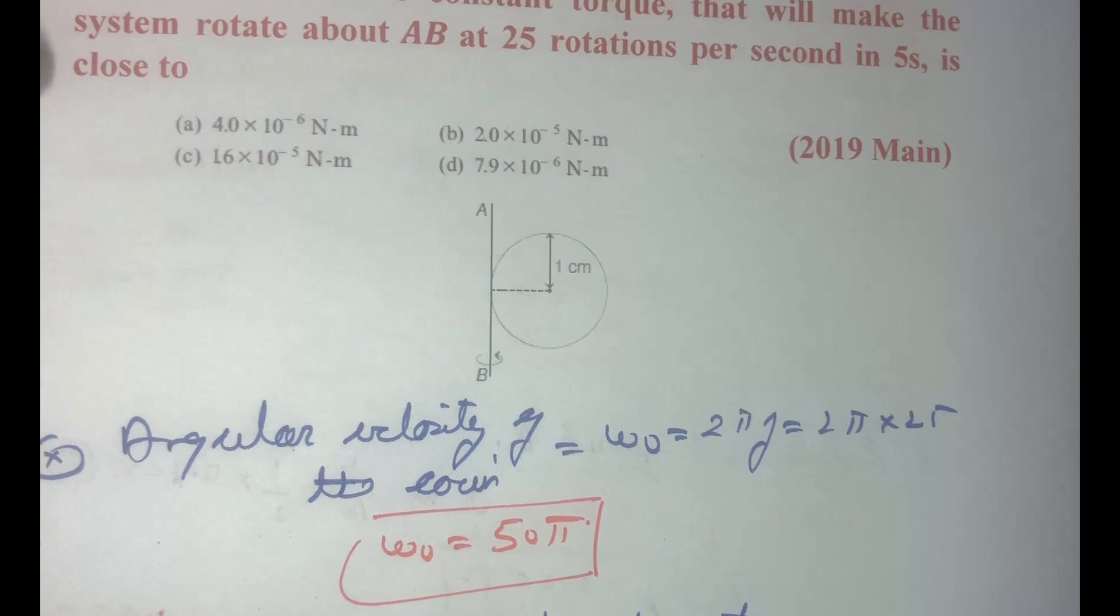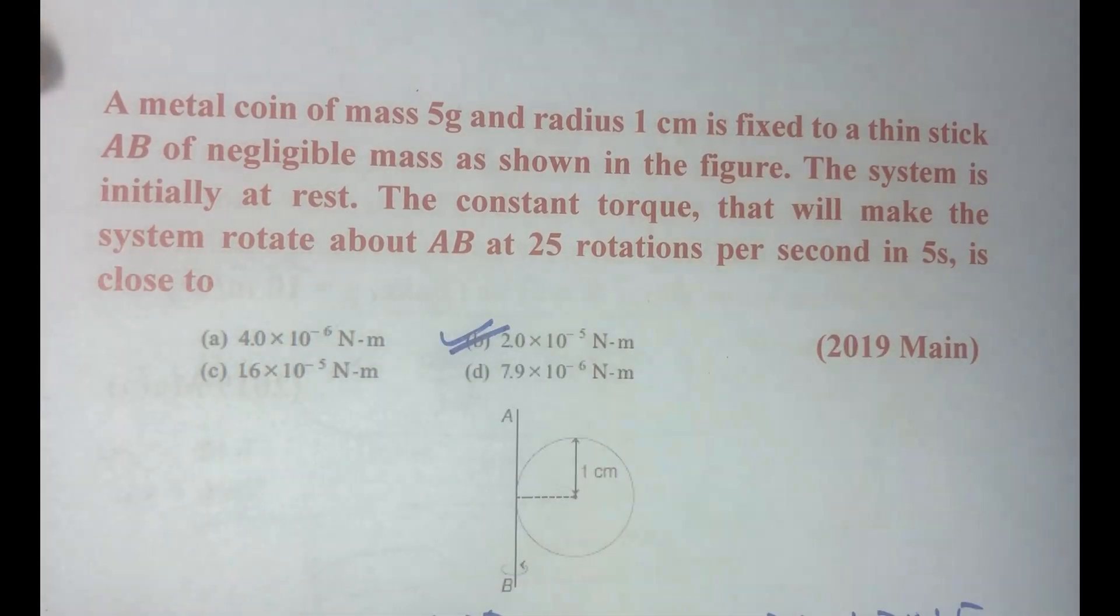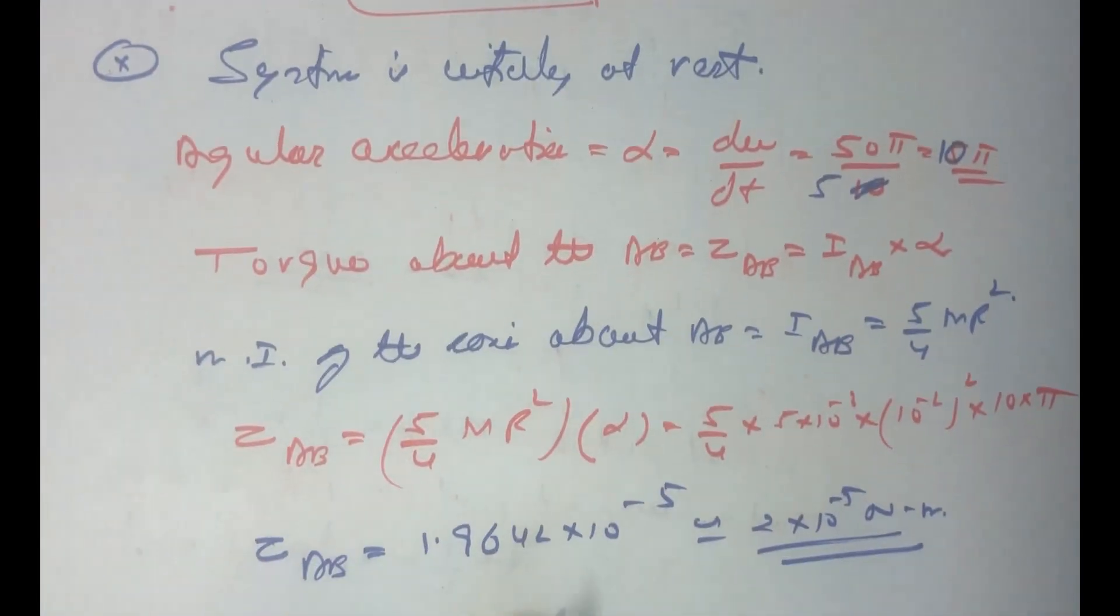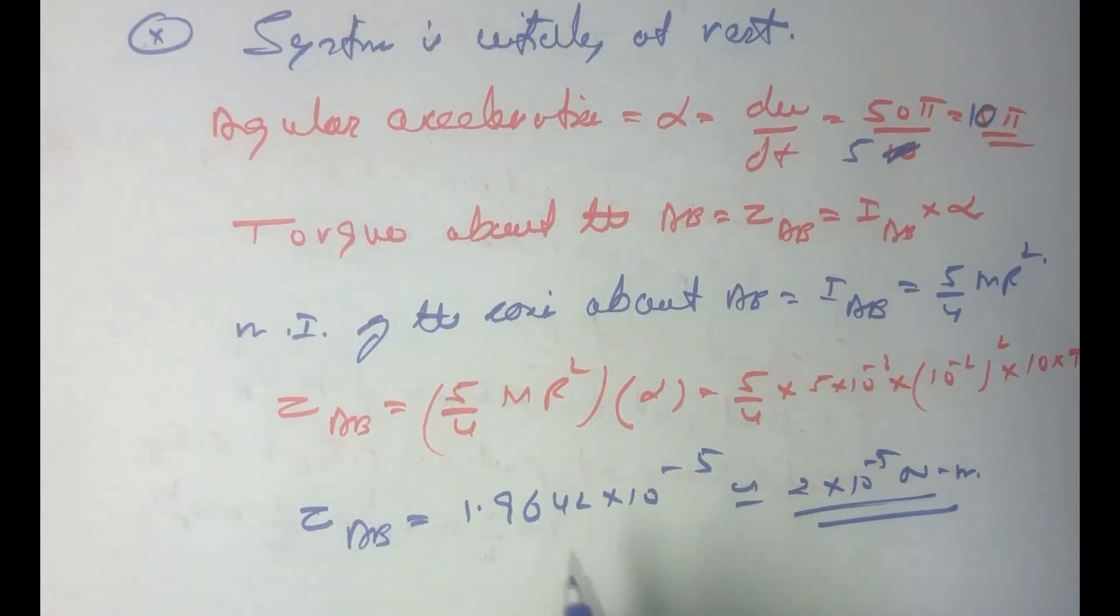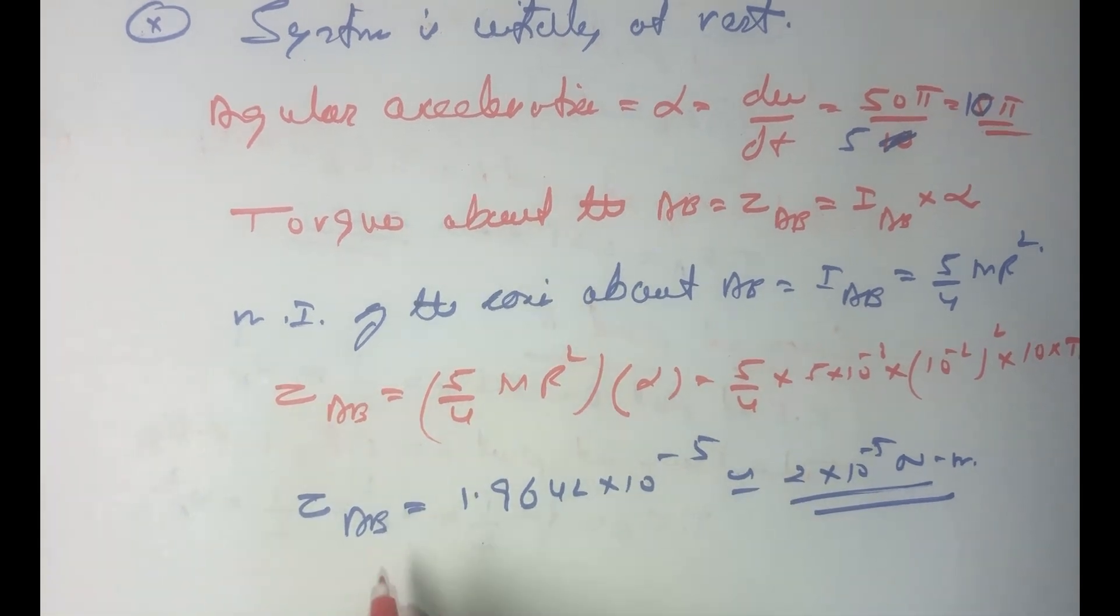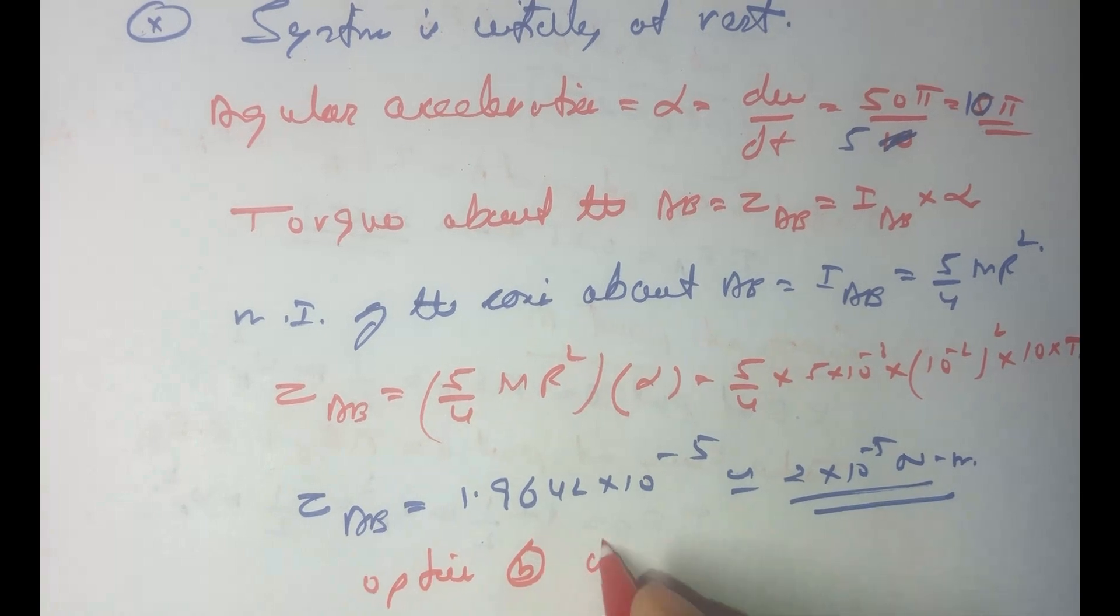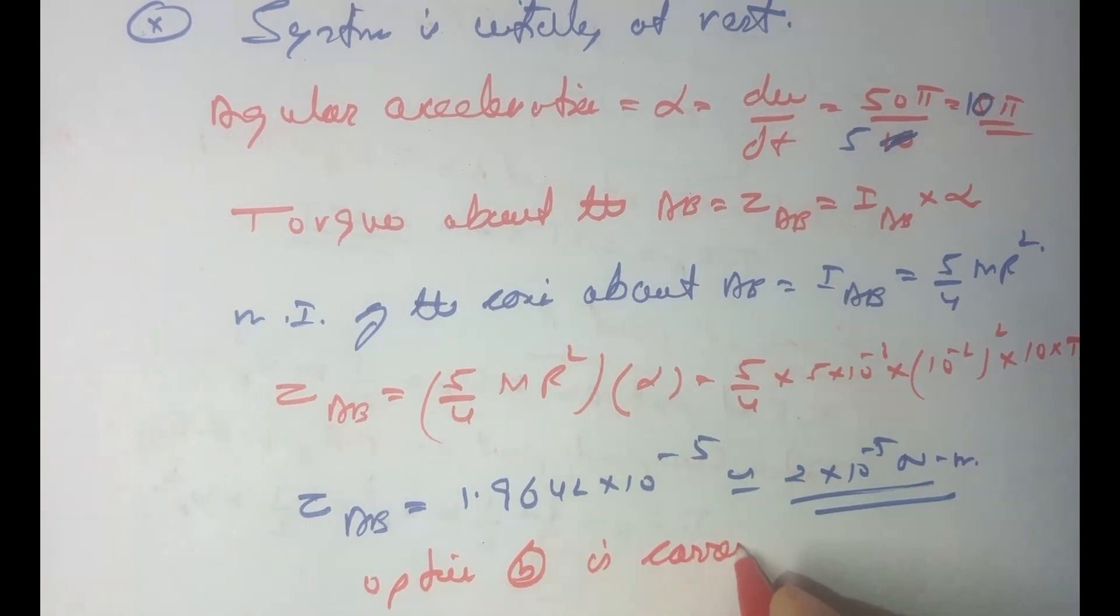So if you see the options available to us the option number b is the correct option, you can say option b is correct. So this completes the question, thank you.